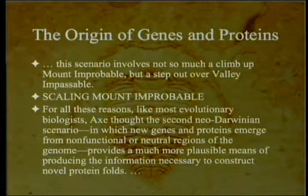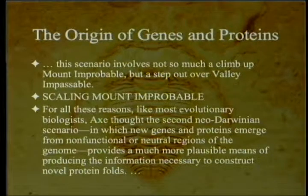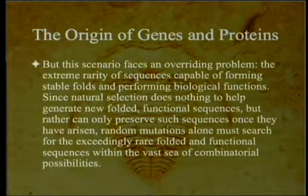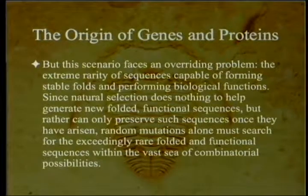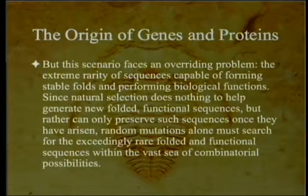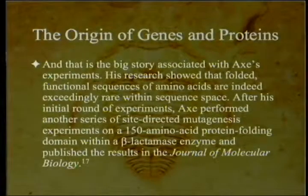For all these reasons, like most evolutionary biologists, Axe thought the second neo-Darwinian scenario — in which new genes and proteins emerge from non-functional or neutral regions of the genome — provides a much more plausible means of producing the information necessary to construct novel protein folds. But this scenario faces an overriding problem: the extreme rarity of sequences capable of forming stable folds and performing biological functions. Since natural selection does nothing to help generate new folded functional sequences but can only preserve such sequences once they've arisen, random mutations alone must search for the exceedingly rare folded and functional sequences within the vast sea of combinatorial possibilities.